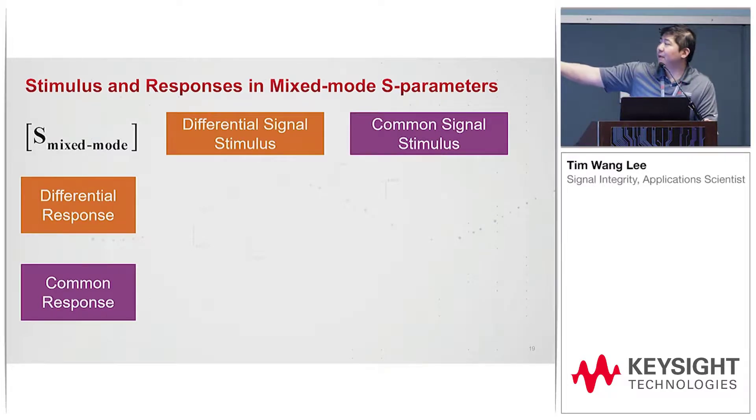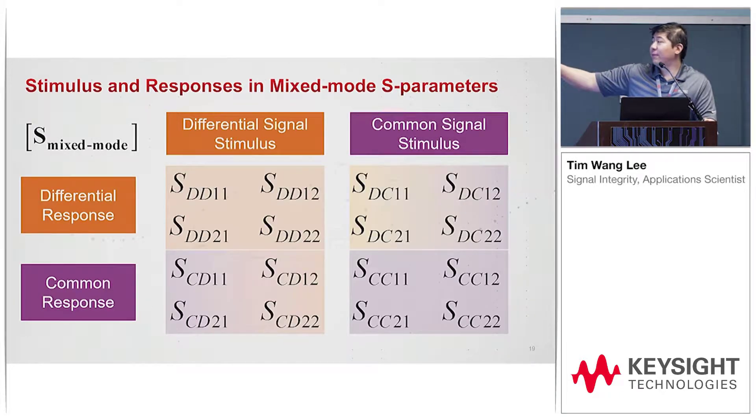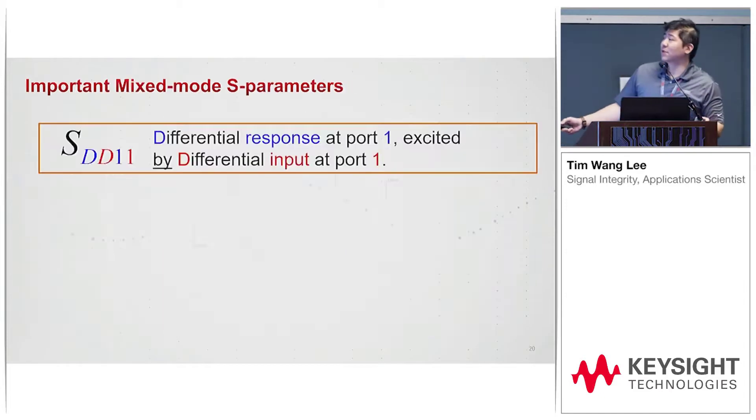Here's a quick matrix overview of what it looks like. We have differential signal stimulus on the top, common on the top, differential response on the left. So there are 16 distinctive S-parameters, and each one of them is a complex number. That's 16 times 2, so there's many numbers.